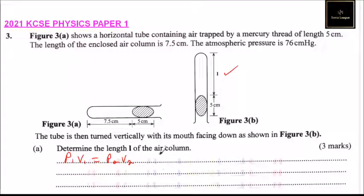So we say the first one we have 76 cm of mercury. That is 76. You multiply by the length which is 7.5 equals. Now the height here because we have the mercury is occupying 5 cm.